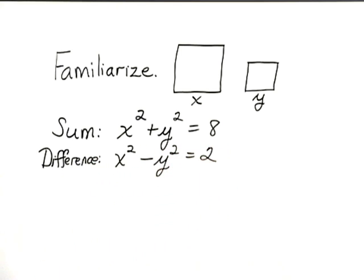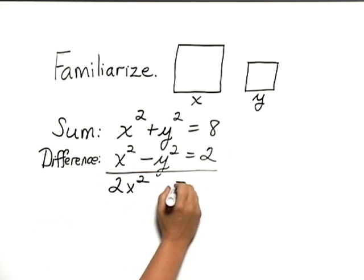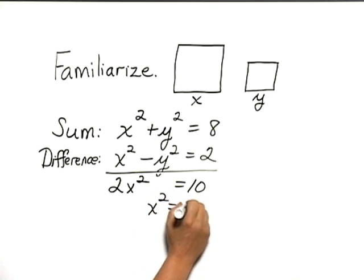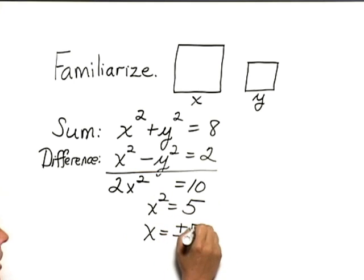Now, we can see we have a system of equations that we can, if we add, eliminate the y squared. This would give us 2x squared equals 10, or x squared equals 5, or x equals plus or minus the square root of 5.